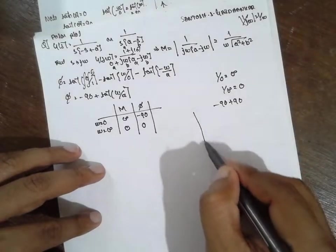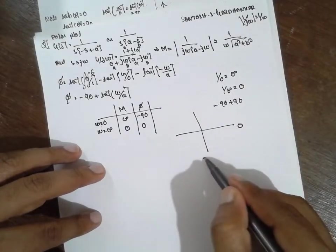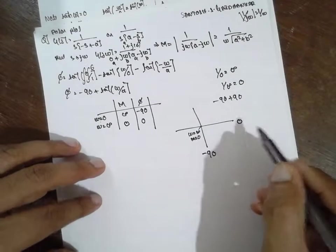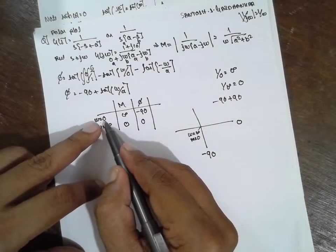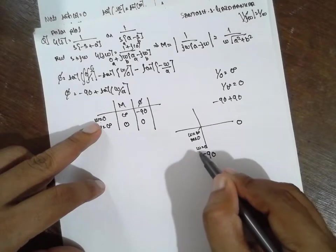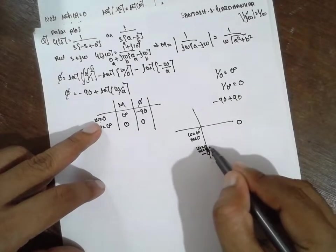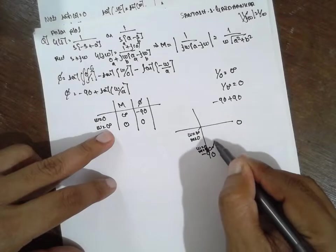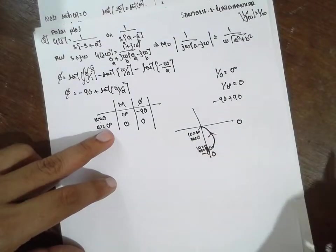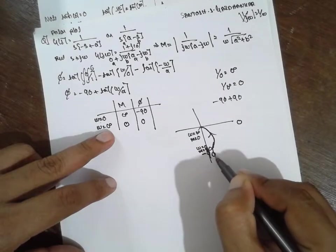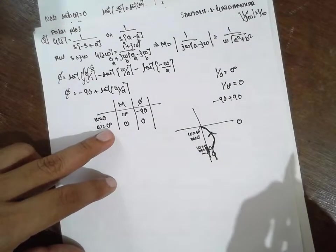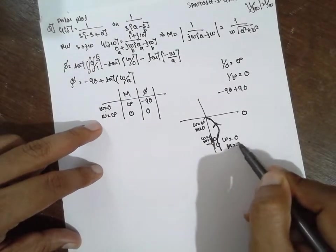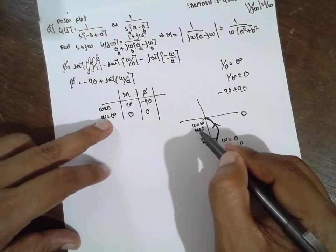Diagram for this one: it starts at minus 90 degrees. When ω equals 0, M is infinite — starts here. When ω equals infinity, M is 0 and the angle is 0 — ends here. This is a special problem. When ω equals 0, M will be infinite; when ω is infinite, M is 0.